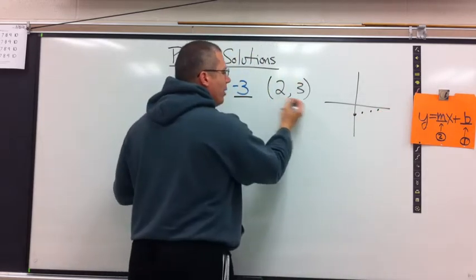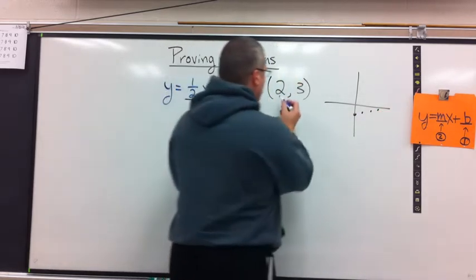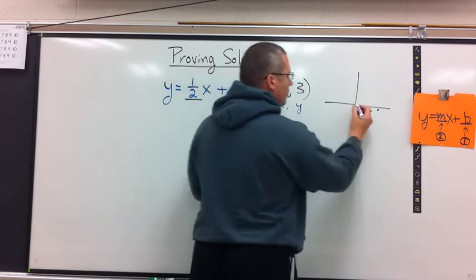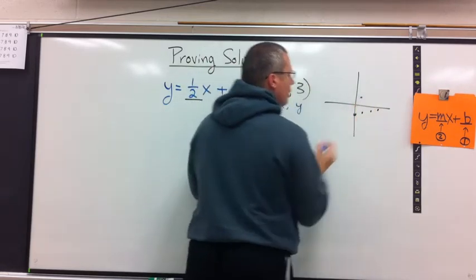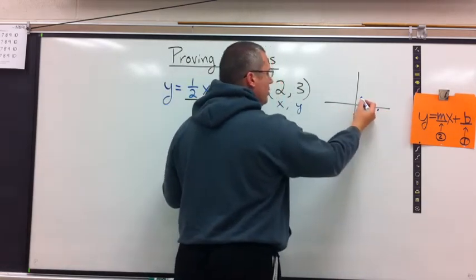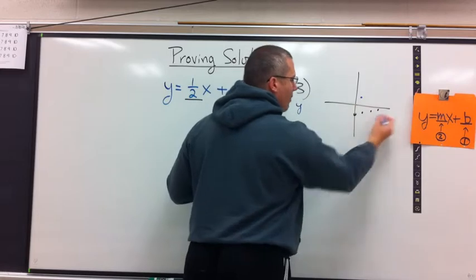I could find the ordered pair 2, 3. 2 is in the x-direction. 3 is in the y-direction. 2 over, 3 up. Yeah, it doesn't look like it's one of my points. So that means this does not live on my line.